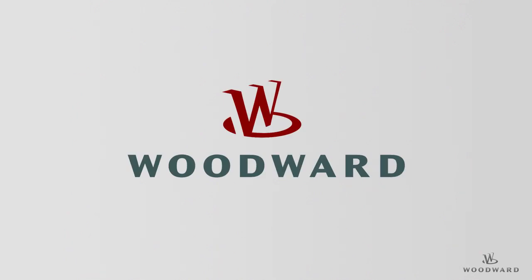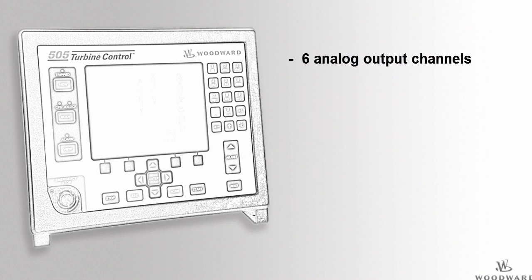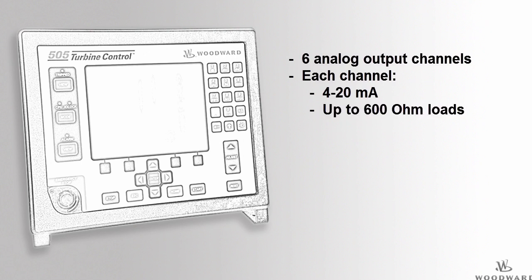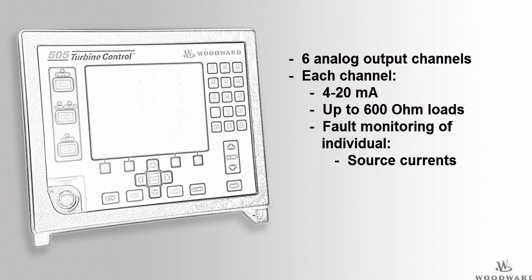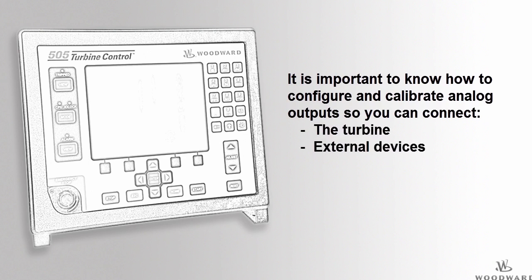Hello and welcome to the 505 tutorial for configuring and calibrating analog outputs. In this tutorial you will learn how to configure and calibrate analog outputs. The 505 has six 4 to 20 milliamp analog output channels. Each channel can drive up to 600 ohm loads and provides fault monitoring of individual source and return currents. It is important to understand how to configure and calibrate analog outputs so you can connect your turbine and external devices to your 505 controller.